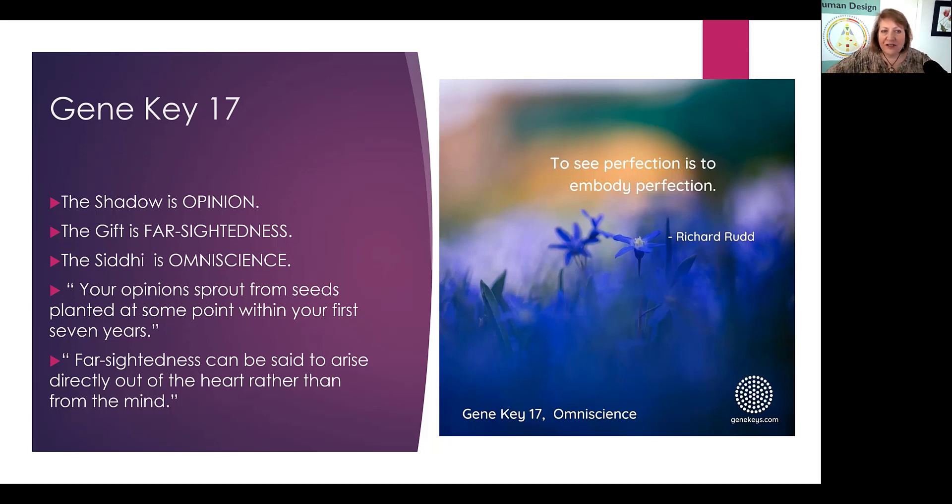In the Gene Keys book, the whole discussion around this was that the shadow is opinion, where we have an opinion, but it's a very, the way he describes it, is that we have an opinion, it's based on one side of the equation, if you will, whether it's one side of the political party, or one side of the economic theory, or one side of whatever the story is, right? And that you're not willing to see the other side. And the difference is that when you get to the gift, which is farsightedness, you can see both sides.